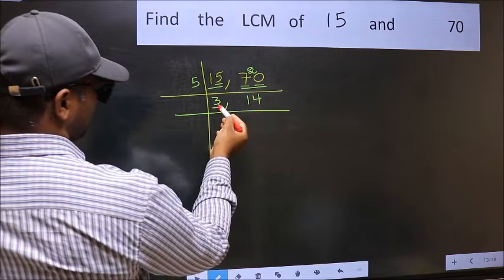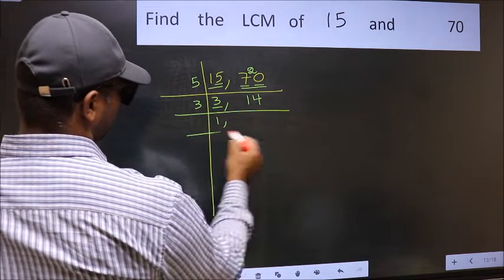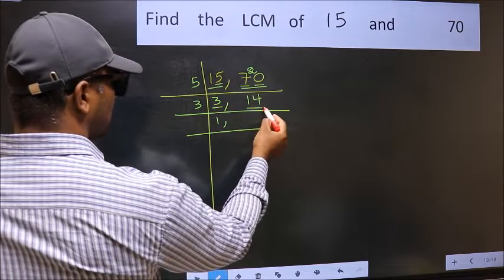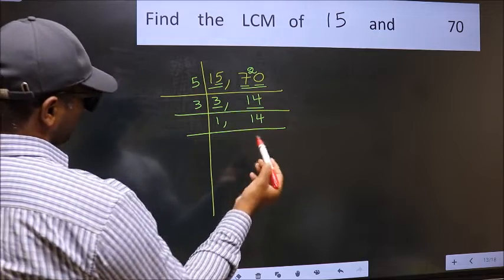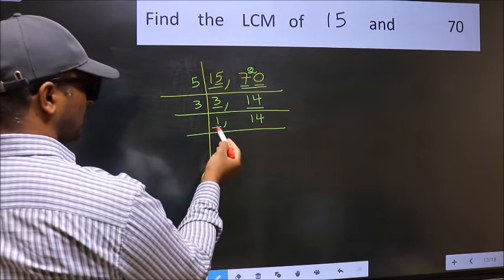Now here we have 3. 3 is a prime number, so 3, 1 is 3. The other number 14, not divisible by 3, so you write it down as it is. Now we got 1 here.